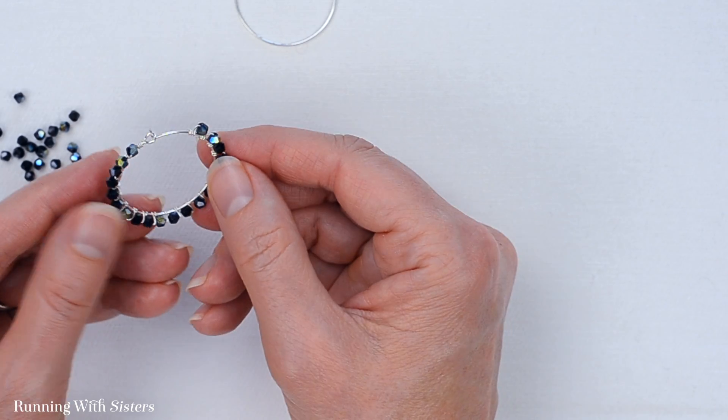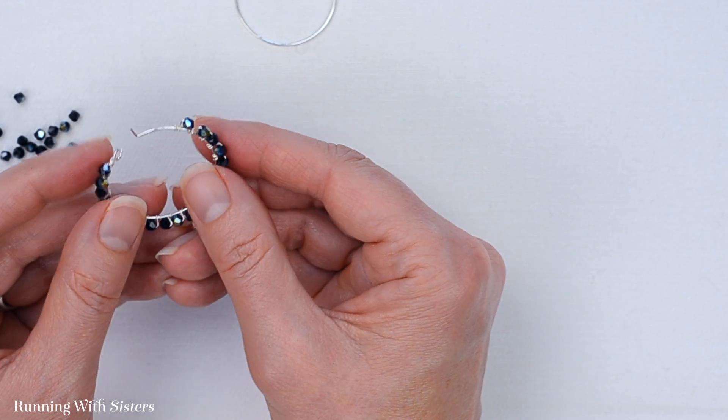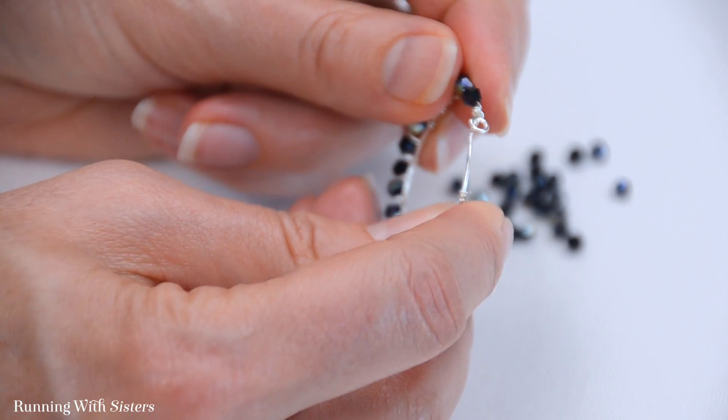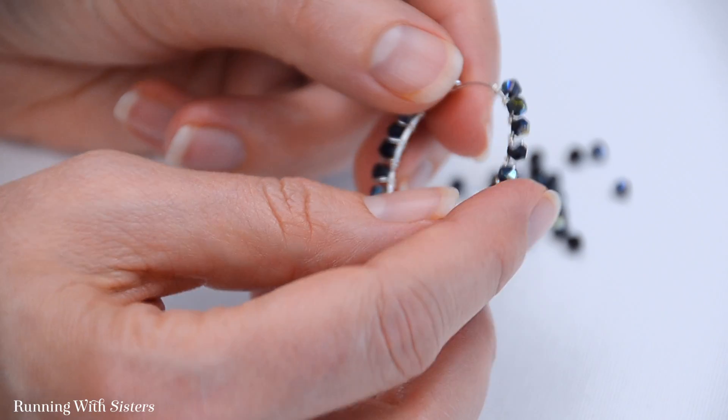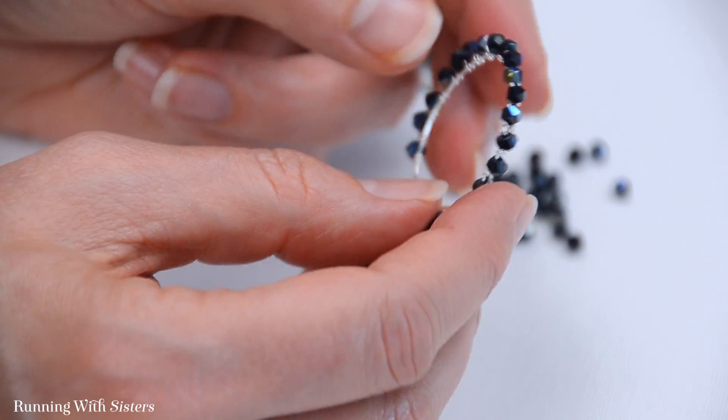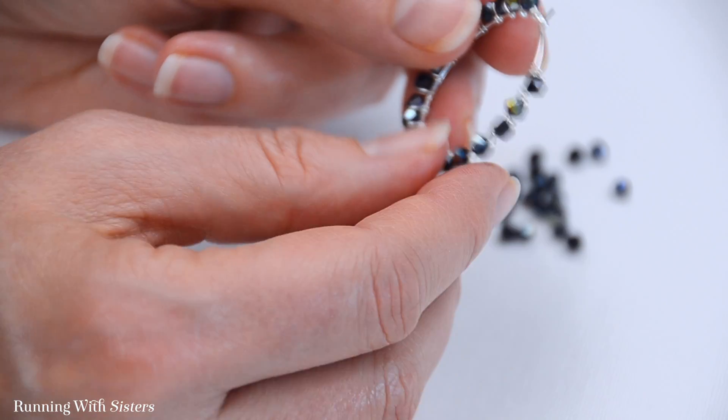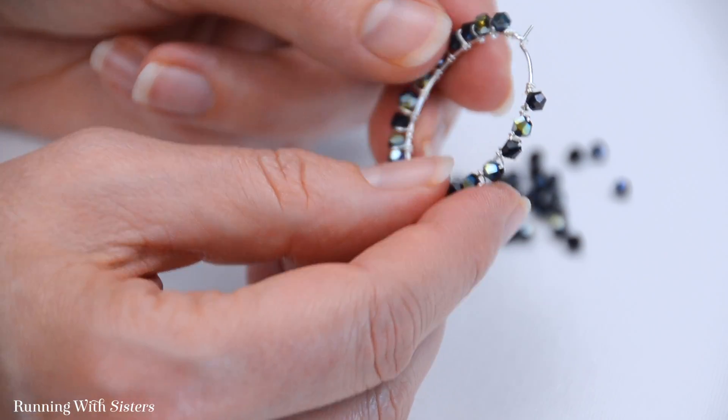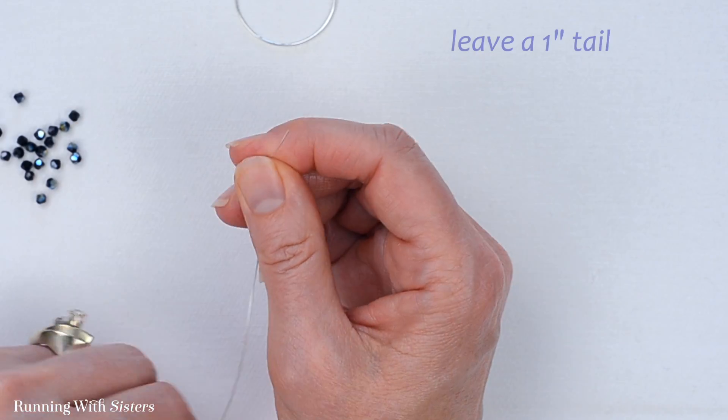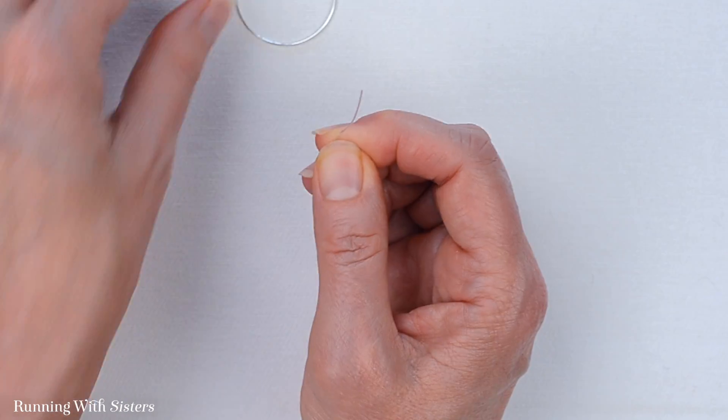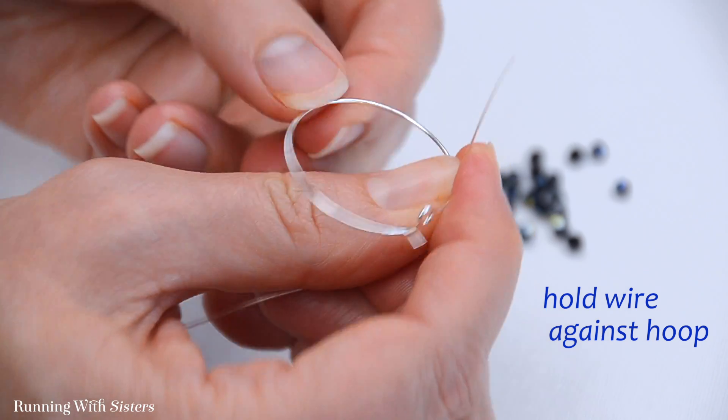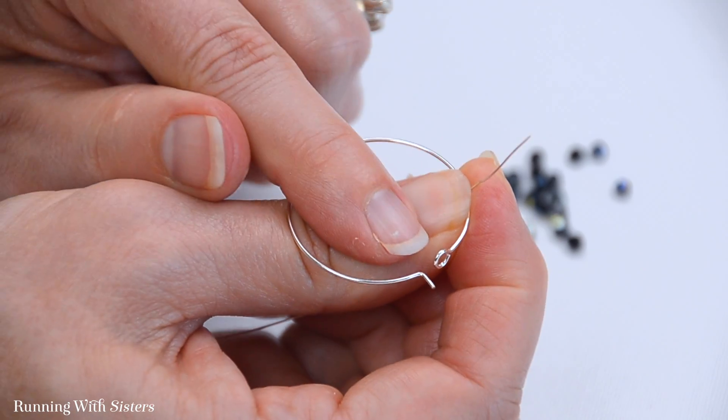Before we get started, I want to show you one of our finished earrings. This is the part of the hoop that goes in your ear, and then it hooks through the clasp end. We're going to show you how to wire on all of these beautiful bicones all the way around using a simple piece of 26 gauge wire. To do that, we started by cutting a 13 inch piece of wire. I'm going to give myself about a 1 inch tail.